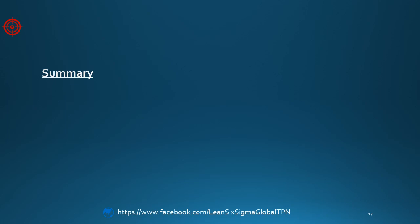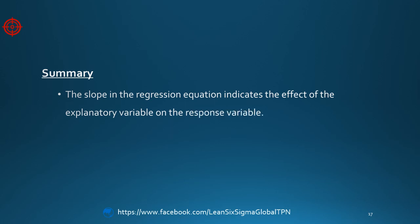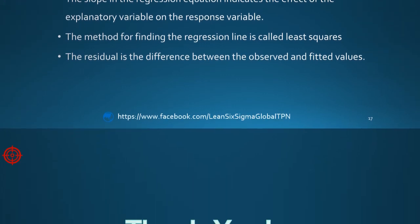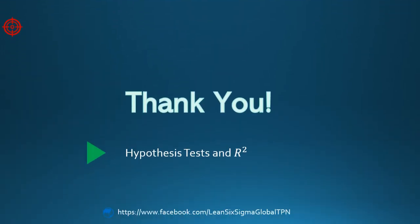Let's review. Remember the slope in the regression equation indicates the effect of the explanatory variable on the response variable. The method for finding the regression line is called least squares, and the residual is the difference between the observed and fitted values. Thank you for listening. In the next lesson, we'll talk about the hypothesis test and R-squared.